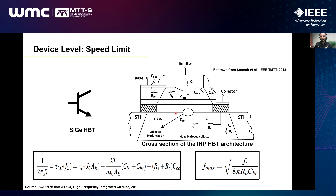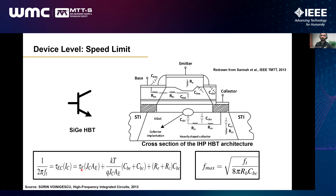Foundries improve transistor performance through vertical or lateral scaling. Vertical scaling decreases the emitter-to-collector distance, reducing transit time and improving ft — this is done by the foundry, not the circuit designer. Lateral scaling reduces base resistance, improving fmax — and as circuit designers we can also design circuits that avoid high base resistance or high base-to-collector capacitance, which is very important when operating so close to fmax.